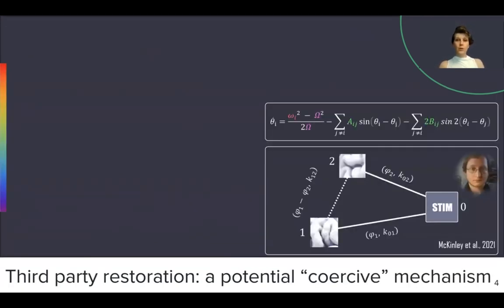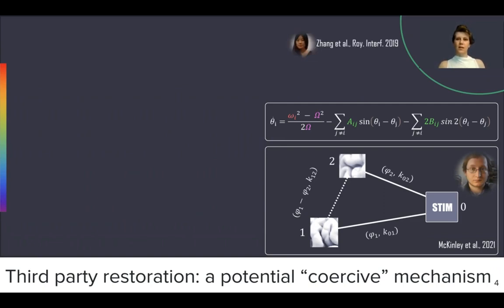This is work conducted by Joseph McKinley, who has been applying a mathematical model with three oscillators to try to understand the complexity that arises from the coordination of more than two oscillators. This work is based on an advanced mathematical model developed by Mengseng Zhang and colleagues in 2019.